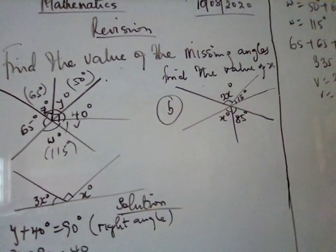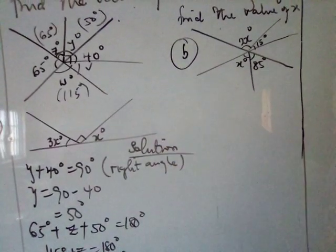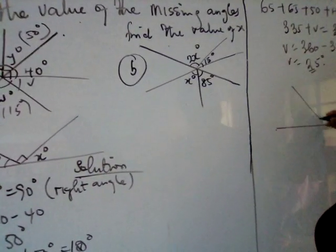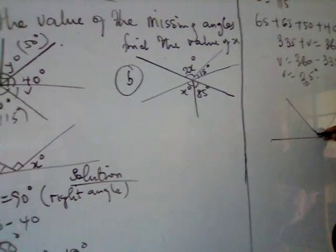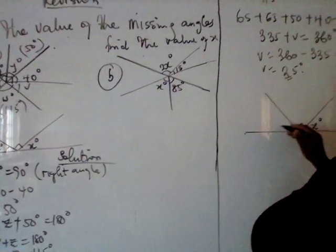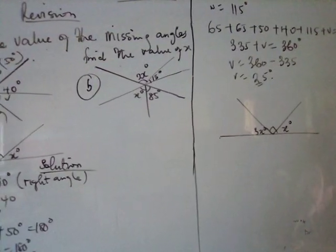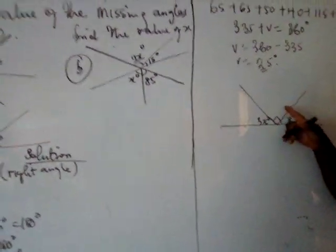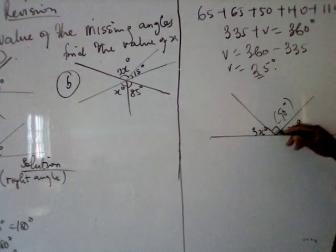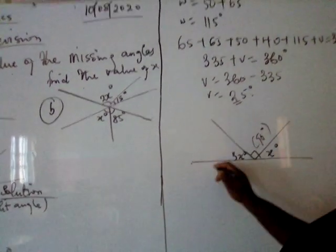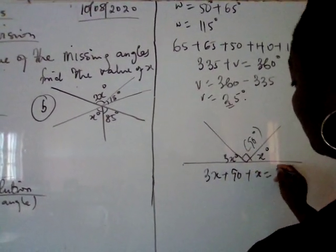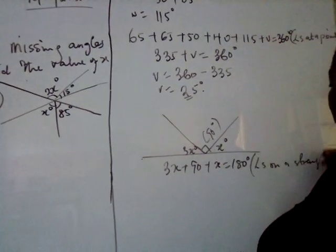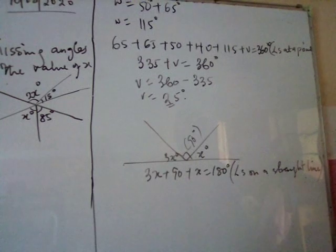Let's look at this one. When you see something like this, here is x degrees, here is 3x degrees. What is the major property here? Angles on a straight line. And there is another property inside that. When you look at this, this is 90 degrees, because right angle is 90. That is to tell you that 3x plus 90 plus x should be 180. The reason: angles on a straight line.